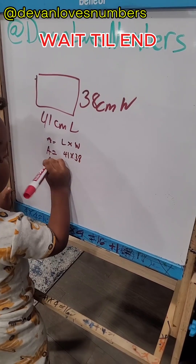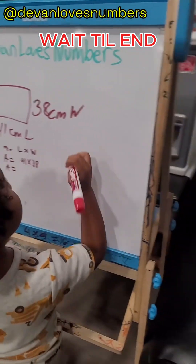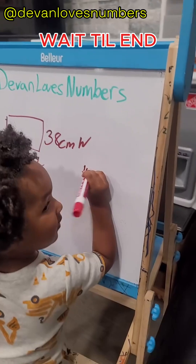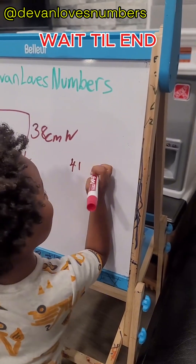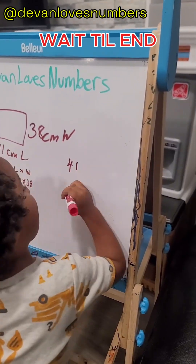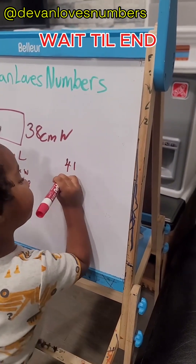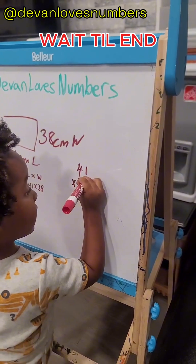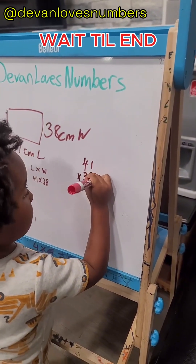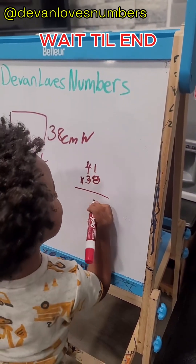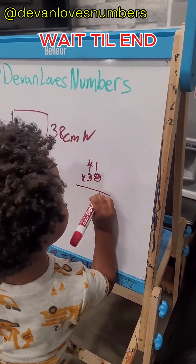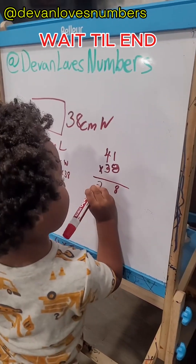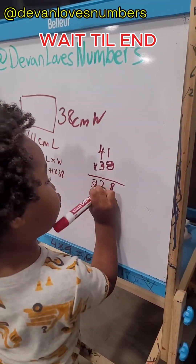Area equals 41 times 38. 1 times 8, 8. 4 times 8, 32.